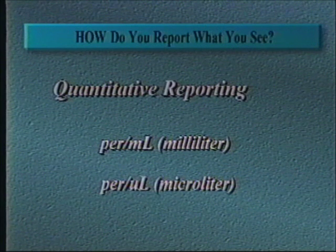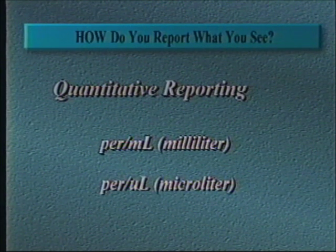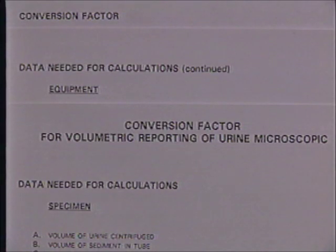That's the numerical approach. There is a movement to report urine microscopics in a more quantitative fashion than current ranges. Some standards suggest reporting microscopic elements as number per milliliter; others recommend numbers per microliter. There is a worksheet in your documentation to convert your system to either milliliter or microliter. We do not recommend doing this for manual microscopic testing — it is cumbersome, time-consuming, and therefore expensive — and considering all the variables in manual testing, the result is not worth the effort.